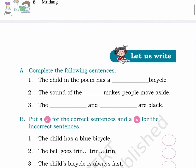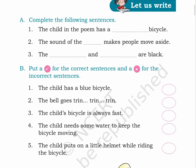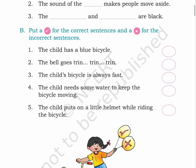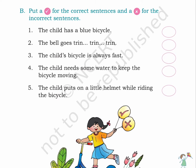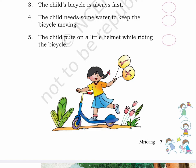Page 7. Let us write. A. Complete the following sentences. 1. The child in the poem has a blank bicycle. 2. The sound of the blank makes people move aside. 3. The blank and blank are black. B. Put a tick for the correct sentences and a cross for the incorrect sentences. 1. The child has a blue bicycle. 2. The bell goes Trin, Trin, Trin. 3. The child's bicycle is always fast. 4. The child needs some water to keep the bicycle moving. 5. The child puts on a little helmet while riding the bicycle.